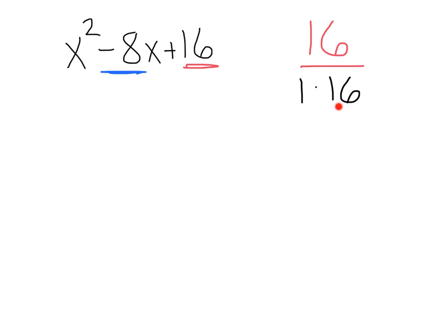If we add two positive numbers, we're never going to get a negative. So, what we can do here is start multiplying negatives together. Now, negative 1 times negative 16 is positive 16, and negative 1 plus negative 16 is going to give us a negative number. Even though it's not negative 8, we're still in the right direction. So, let's move on to our next factors.